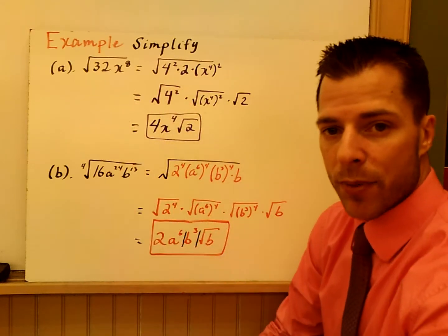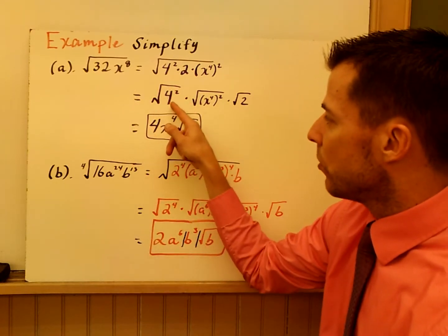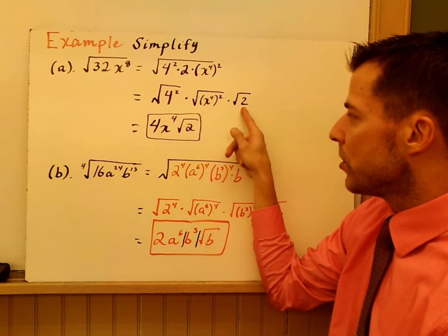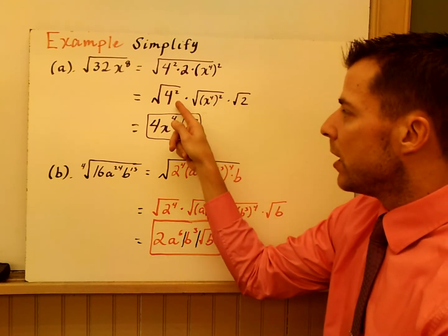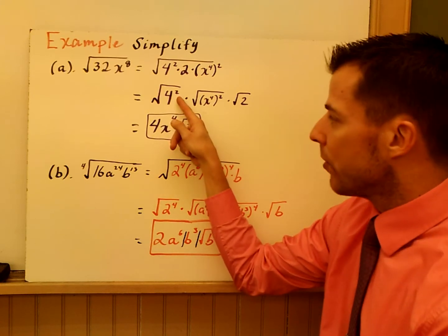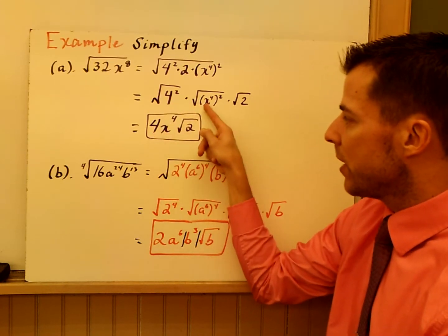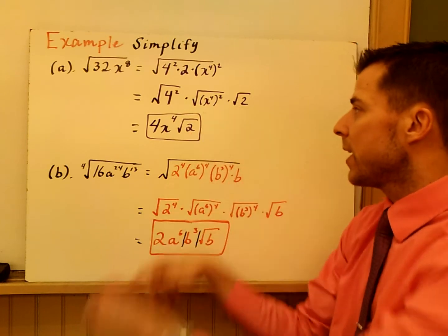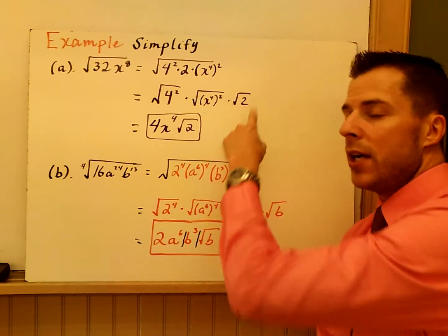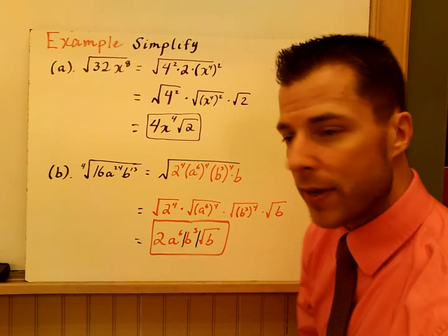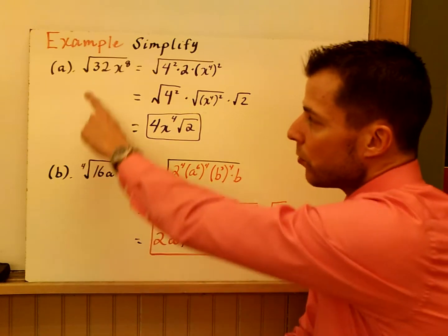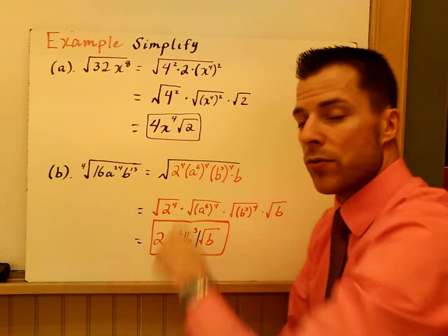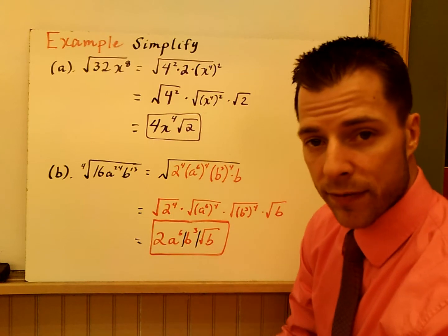I took the root of 4 squared times the root of x to the fourth squared times the root of 2. If you have an index that matches a power, that base is going to come out. The square root of 2 stays underneath the radicand because the index is 2 but the power is only 1 — it can't come out. So the square root of 32x to the eighth simplifies to 4x to the fourth times the square root of 2.